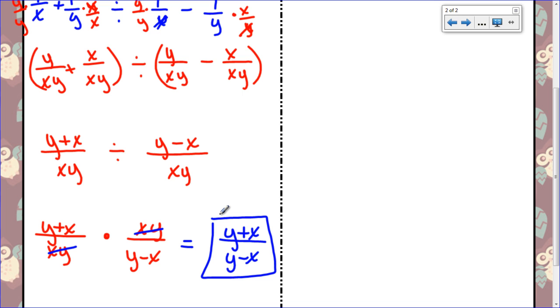So if you've got addition and subtraction along with the complex fraction, take care of the addition and subtraction first. Find your common denominators. Do all of that. Then keep change flip. Let's do one last one.